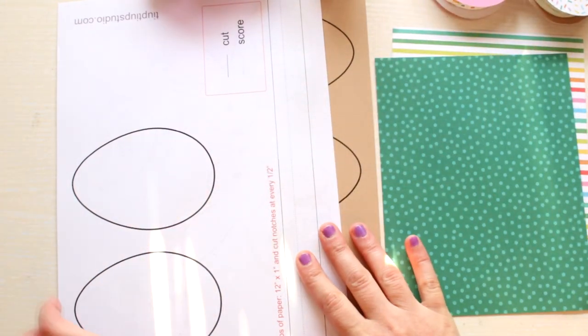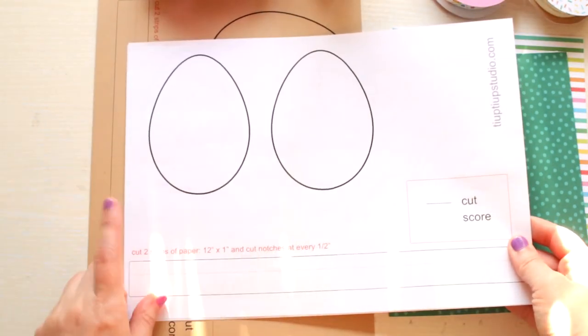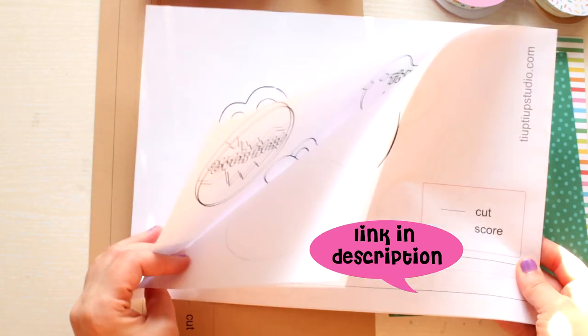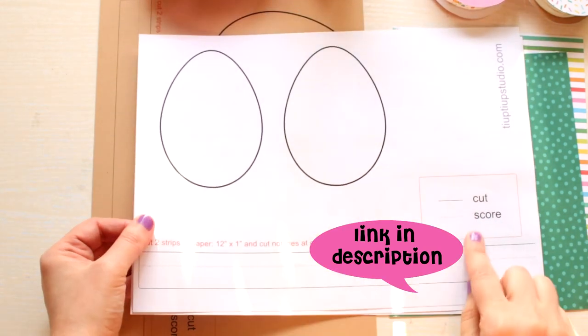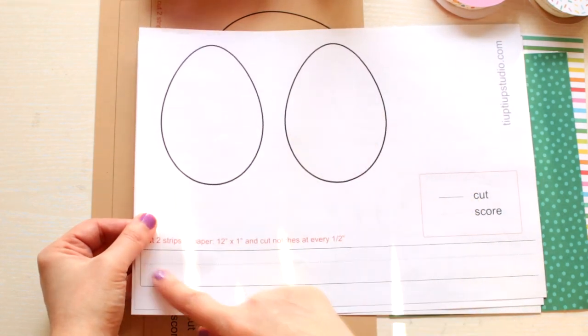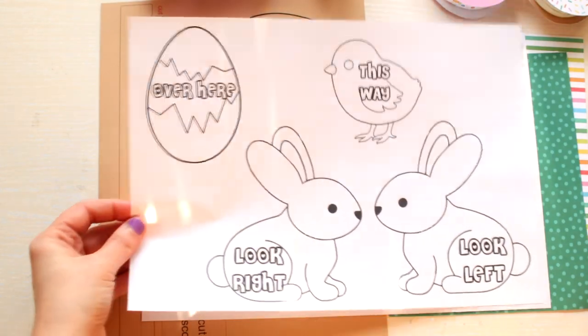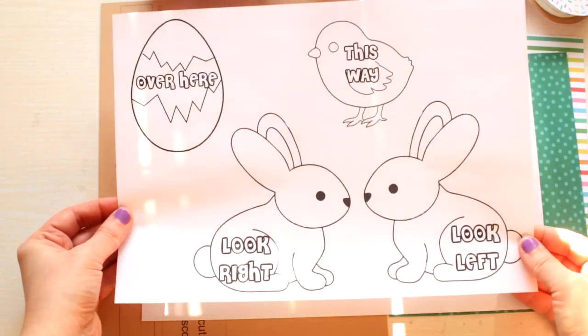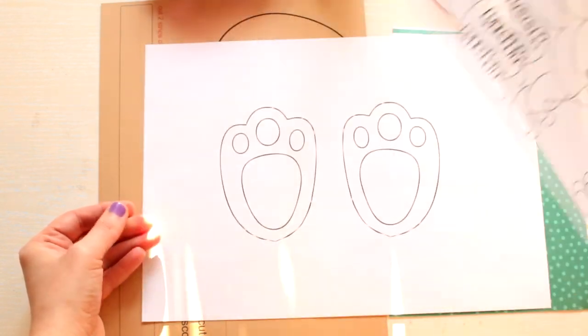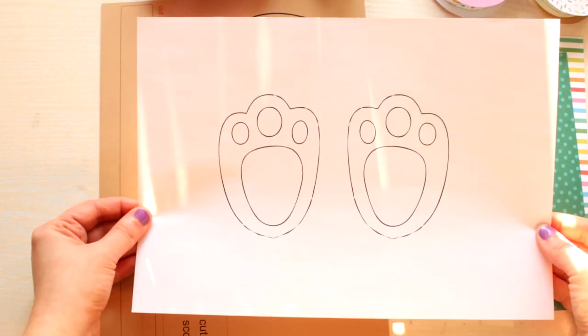In the description below you'll find a link to my template. I created this specially for this project. It's a free template. It has three pages. On the first page you will find the template for the box, for the front and the back of the box. On the second page you will find the clues for your egg hunt. And on the third page you have the bunny paws.